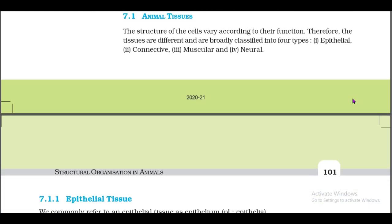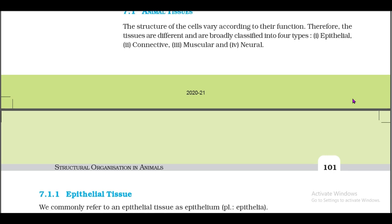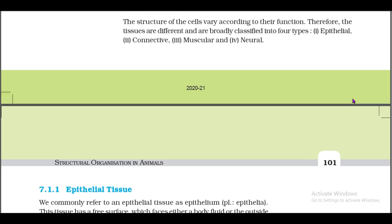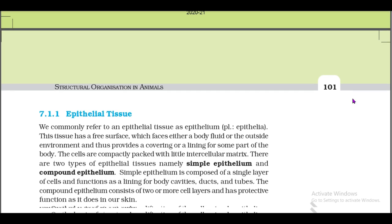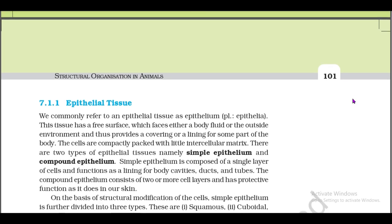The structure of the cells varies according to their function. Therefore, the tissues are different and are broadly classified into four types: first, epithelial; second, connective; third, muscular; and fourth, neural. 7.1.1: Epithelial Tissues.